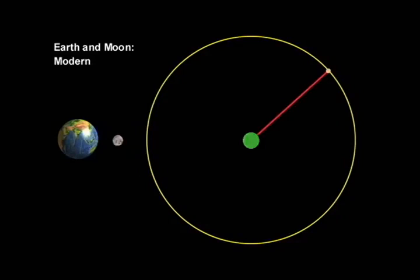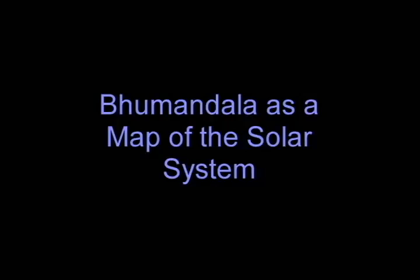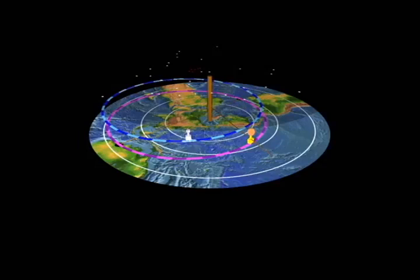Bhumandala as a map of the solar system. We have shown that Bhumandala, in the orbits of the sun, moon and planets, have the structure of an astrolabe based on a stereographic projection of the earth globe.